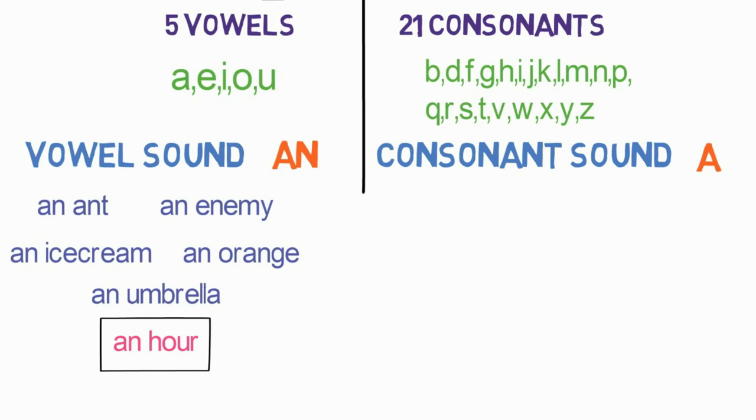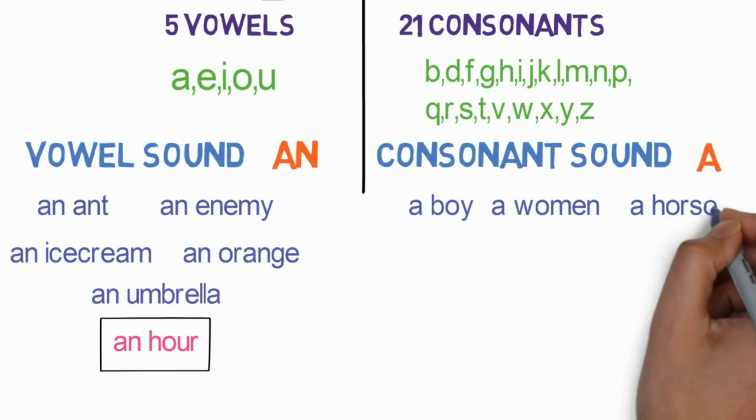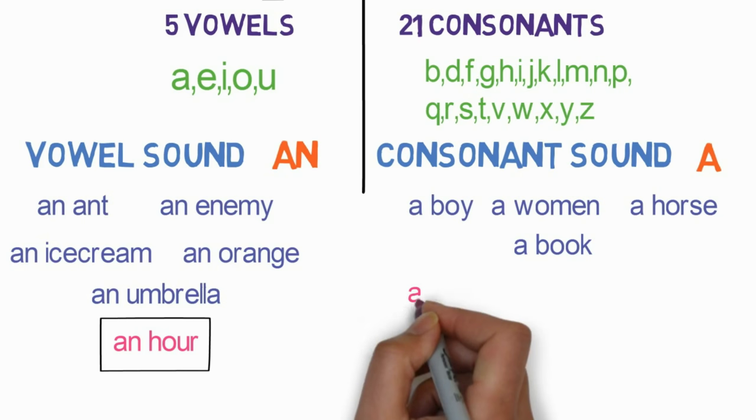Let's look at examples where we use the article 'a' before a word: a boy, a woman, a horse, a book. These all start with a consonant sound.